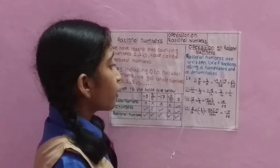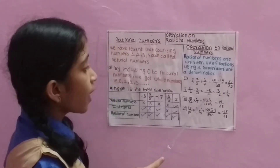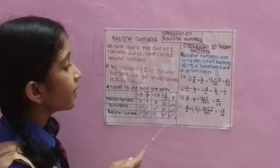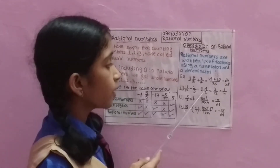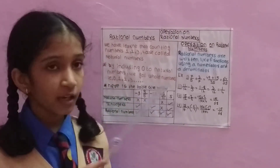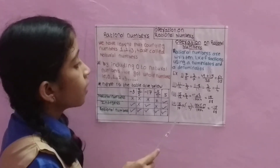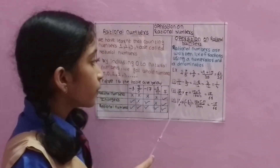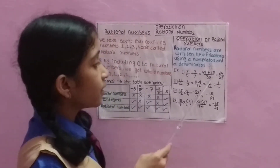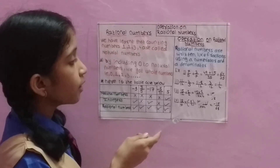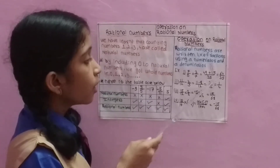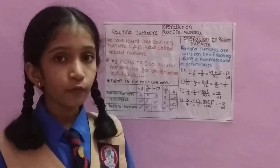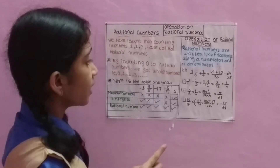Second example: 11 upon 12 minus 2 upon 3. We multiply cross, and the answer counts as 11 minus 8, which gives 3 upon 12. We simplify to get the final answer of 1 upon 4.